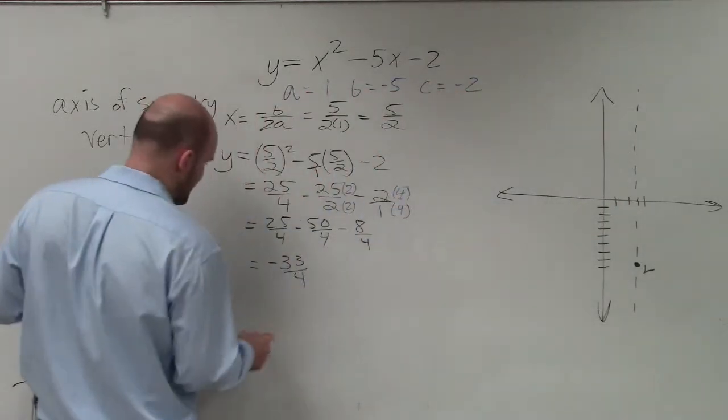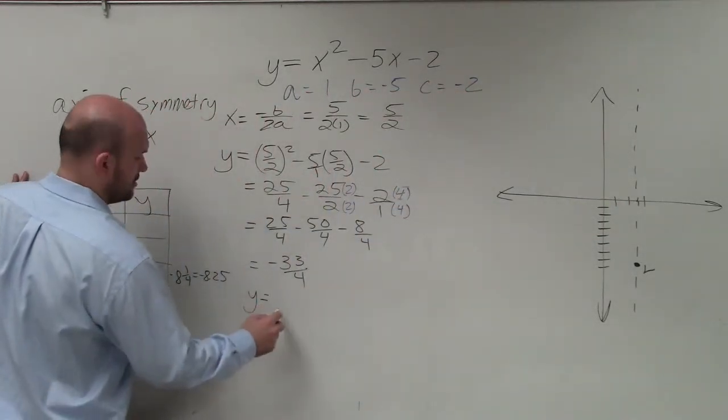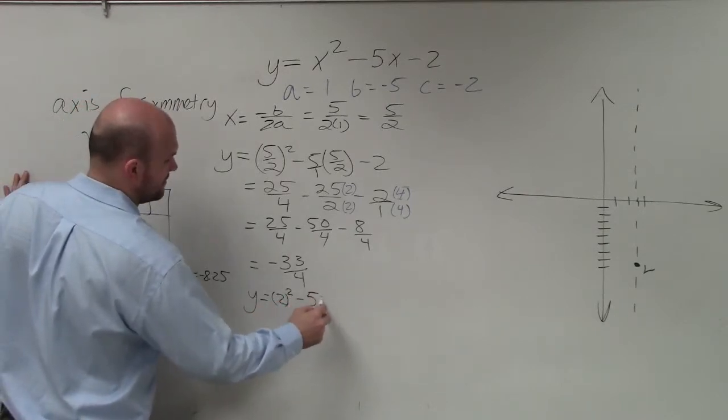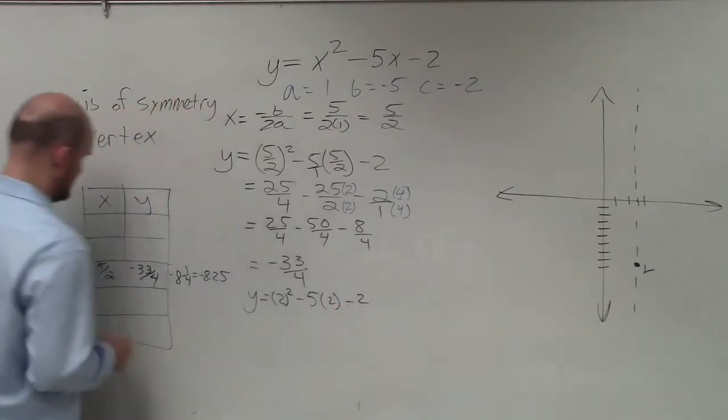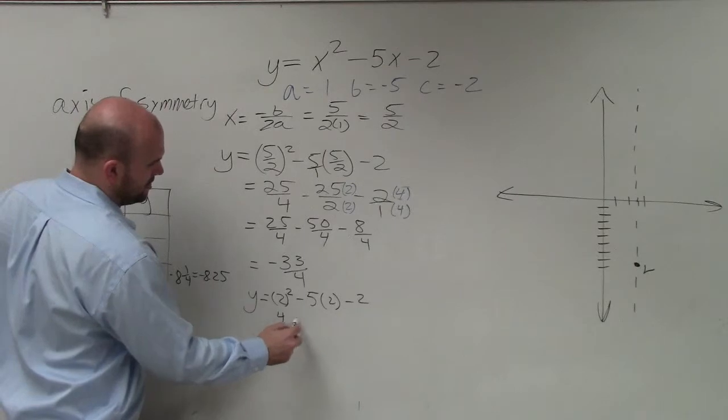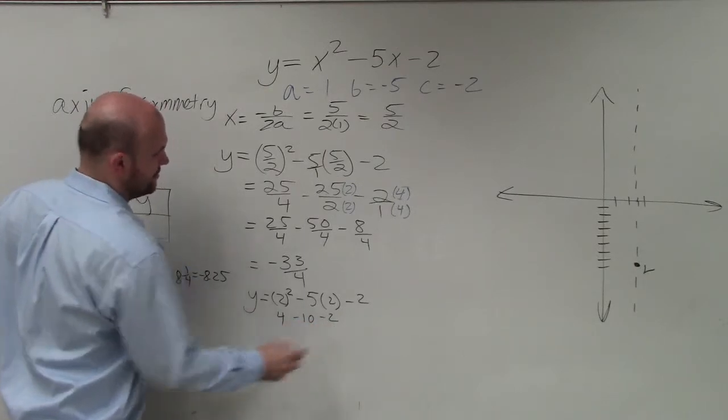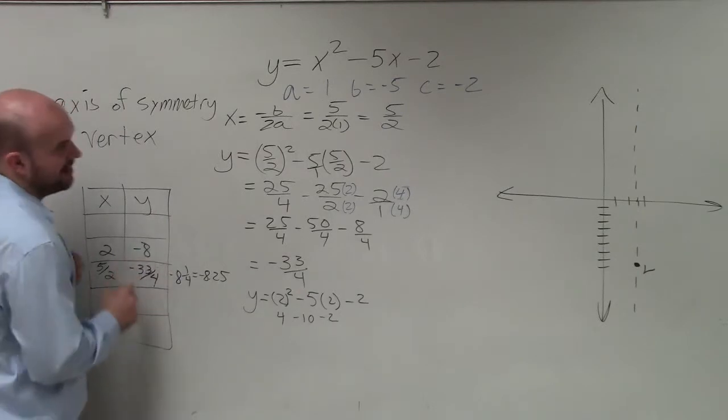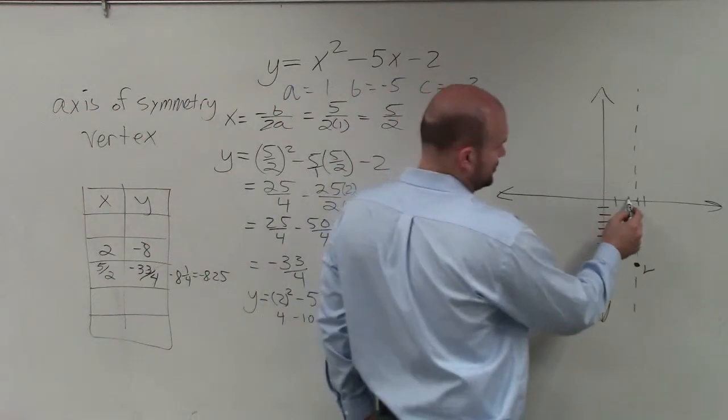So to finish up my graph, all I'm simply going to do is plug in 2 for x, 2 squared minus 5 times 2 minus 2. So I'll plug in 2. And when I do that, I get 4 minus 10 minus 2. So 4 minus 10 is negative 6 minus 2 is negative 8. Then I plot that number. So I go 2, negative 8.